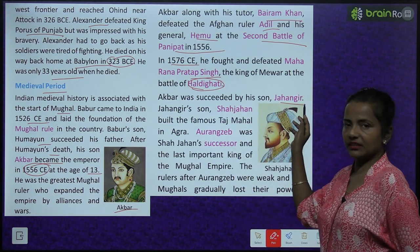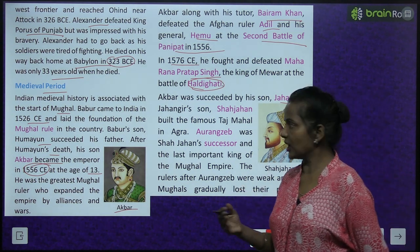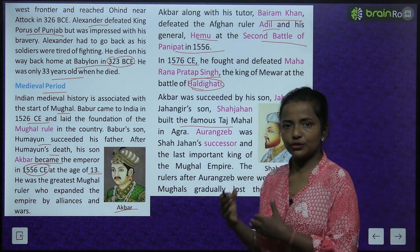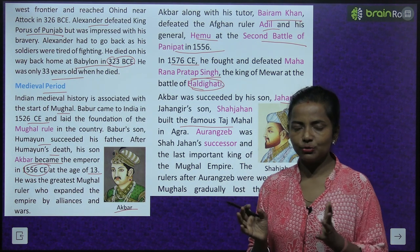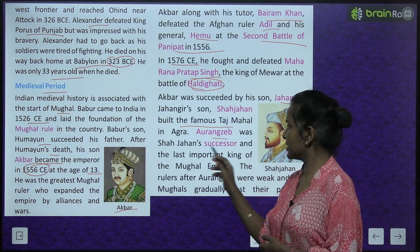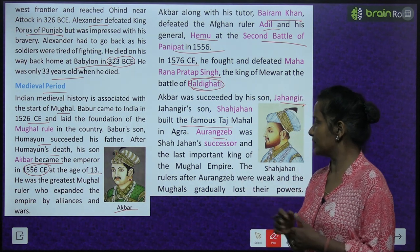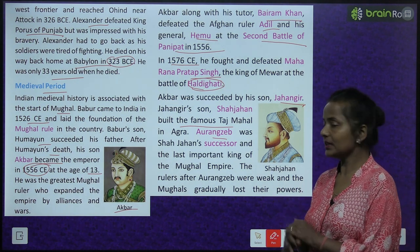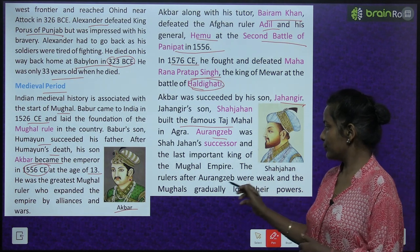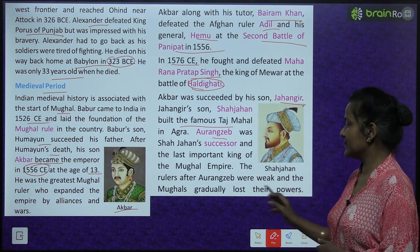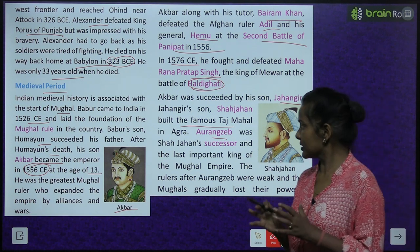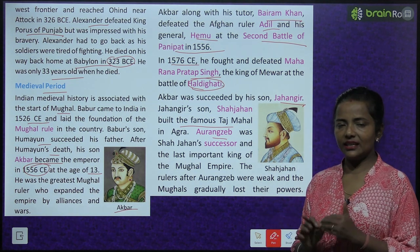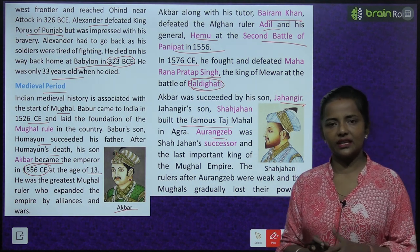Akbar was succeeded by his son Jahangir. Jahangir's son Shah Jahan built the famous Taj Mahal in Agra. Aurangzeb was Shah Jahan's successor and the last important king of the Mughal Empire. The rulers after Aurangzeb were weak and the Mughals gradually lost their powers.